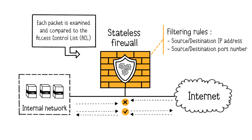Stateless firewalls are basic but very effective for simple filtering tasks, such as blocking or allowing specific IP addresses, port numbers, or protocols, and they are suitable for tasks where high throughput and low latency are important. However, this type of firewall has limitations when it comes to advanced threat detection and application layer filtering. Although these firewalls are becoming less common, they still find use in certain routers or operating systems.